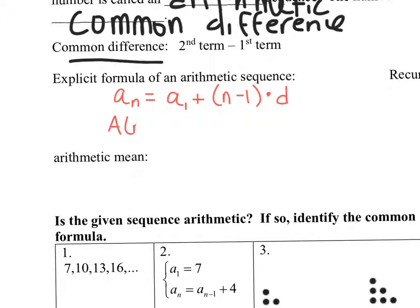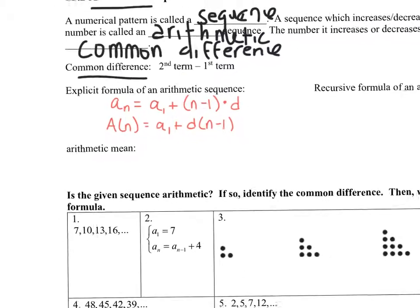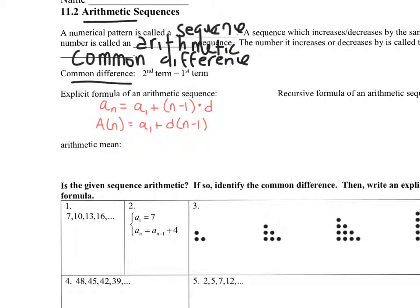You could also write it as a(n) equals a sub 1 plus d times (n minus 1). Just make sure you're multiplying d times (n minus 1). The explicit formula means you can plug in any number for n and get the value at that specific term.